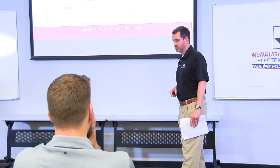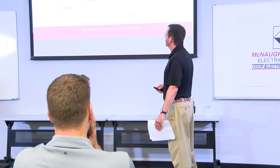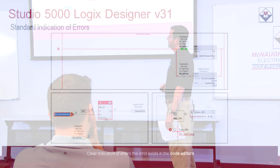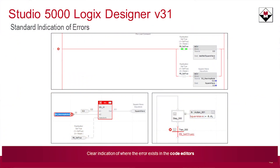One of the other features is a standard indication of errors. If you've got an error in the code and you're trying to find it, they now have a red circle icon with an X that lets you know exactly where you need to look within your code to troubleshoot.